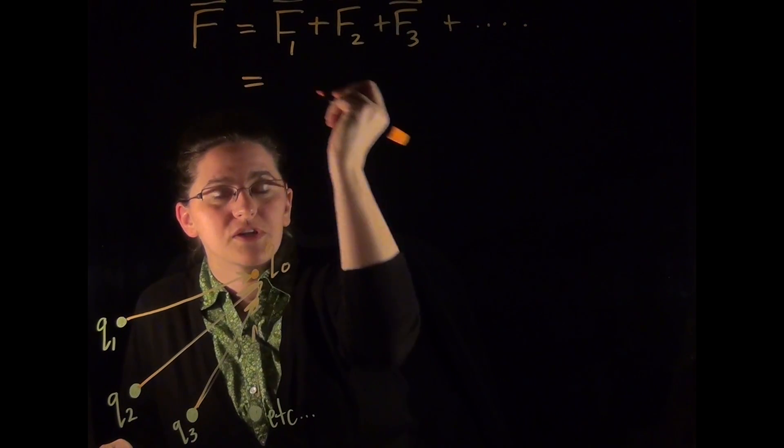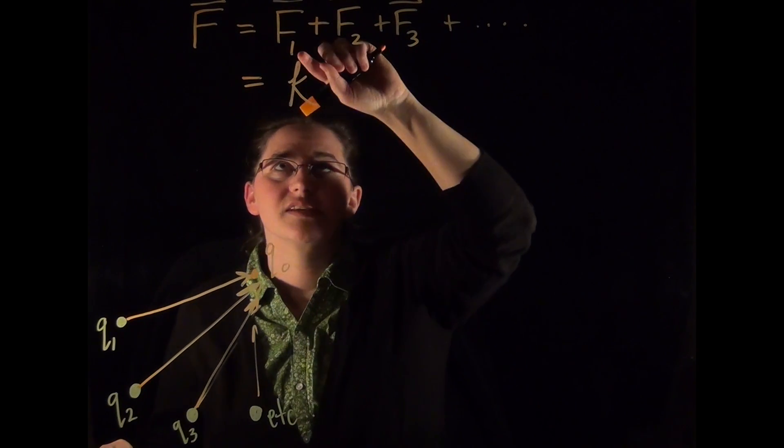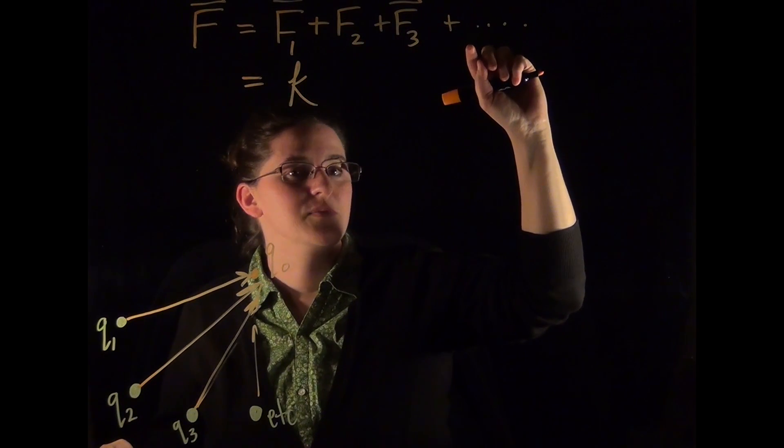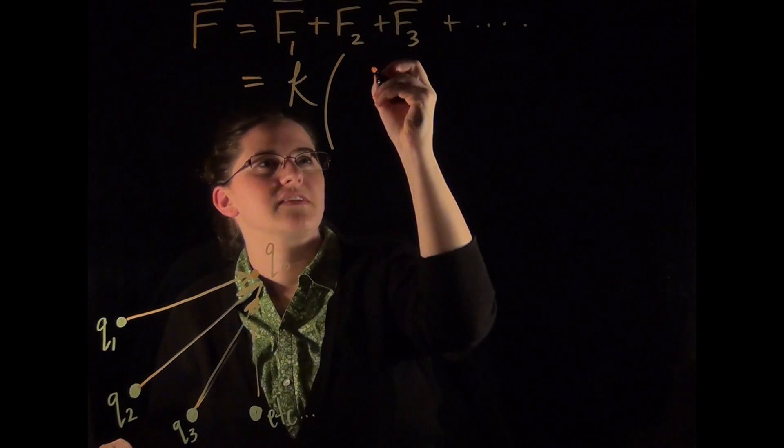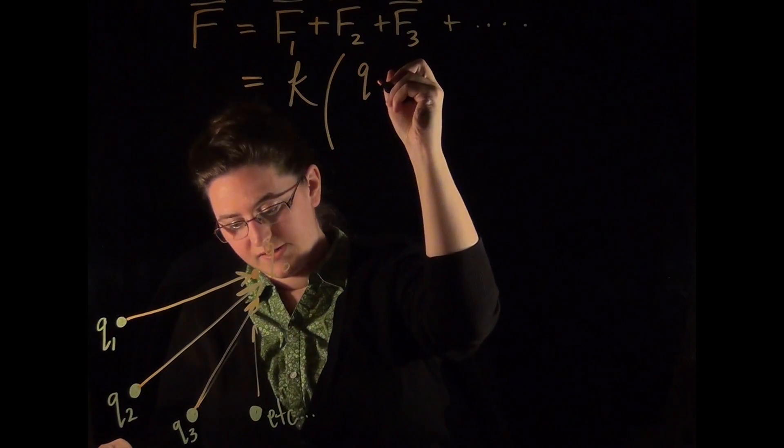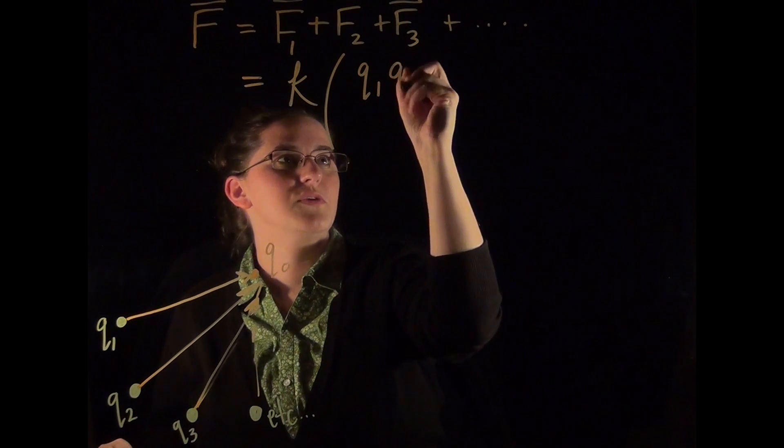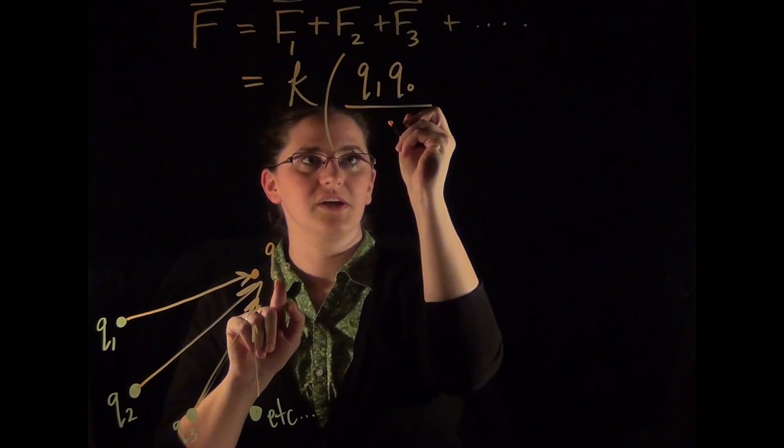And that's going to be equal to, according to Coulomb's law, the Coulomb's constant will exist in each one of these terms. And the forces look like this, and we've looked at the form of this Coulomb's law as Q1, Q0. So each of them will contain the test charge value Q0, and the source charge value Q1, Q2.